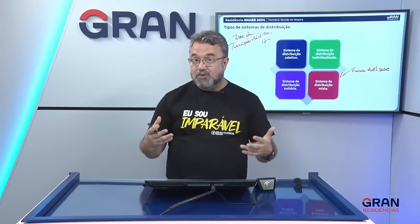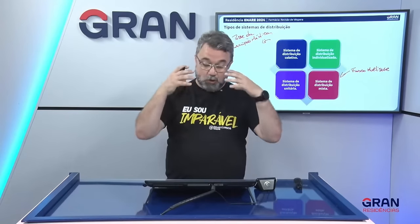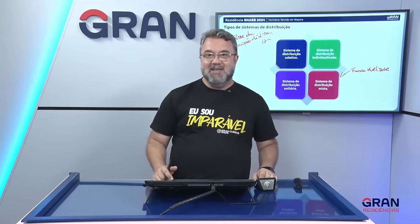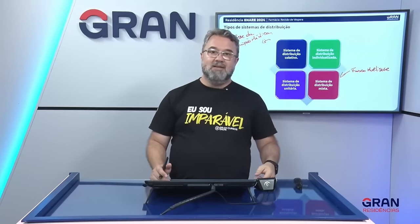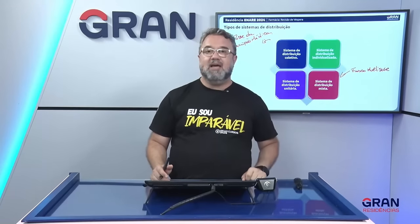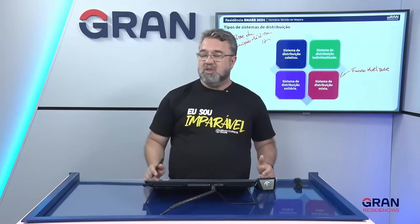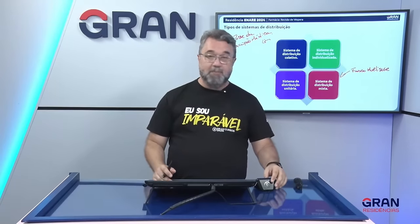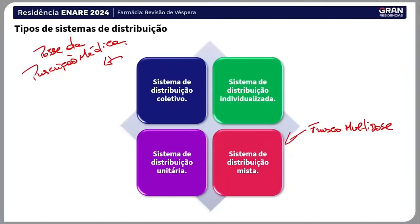Hipoteticamente, num sistema totalmente de distribuição unitária, teríamos que pegar um frasquinho, colocar 30 ou 40 gotas e mandar para a enfermagem administrar. Existem sistemas industriais de manipulação onde é possível manipular a dose exata — por exemplo, tirar das ampolas e passar para outra ampola com doses diferenciadas, verificando viabilidade técnica. Atenção para não errar, porque é uma questão tranquila de resolver sobre sistemas de distribuição.